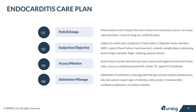Let's do a quick review of endocarditis. This is the inflammation of the lining of the heart valves, usually from an infectious source, which can cause valvular disorders and arrhythmias. The cause is usually from IV drug use or from artificial valves. Subjective data includes chest pain and symptoms of heart failure. Objective data includes a temperature, elevated white blood cells, signs of heart failure, heart murmurs, and embolic complications like splintering hemorrhagic nail beds, finger clubbing, and Janeway lesions.